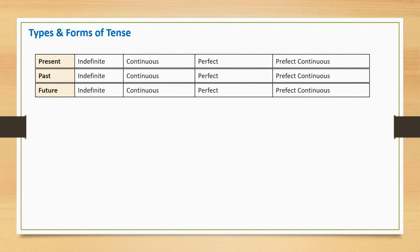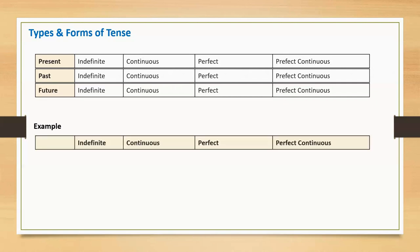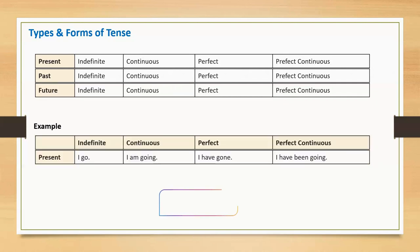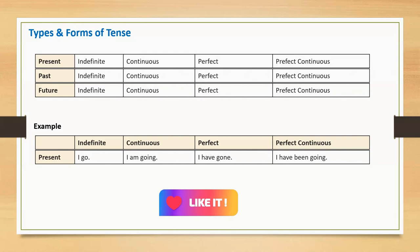Let's consider some examples. Present indefinite: I go. Present continuous: I am going. Present perfect: I have gone. Present perfect continuous: I have been going.